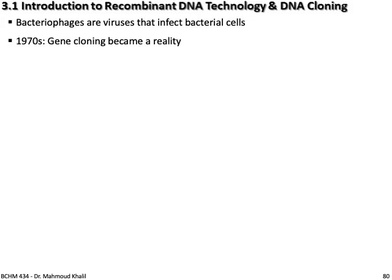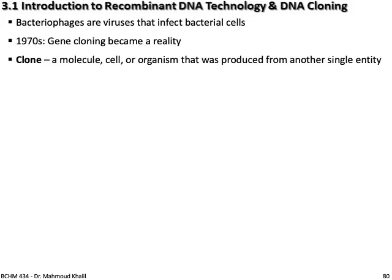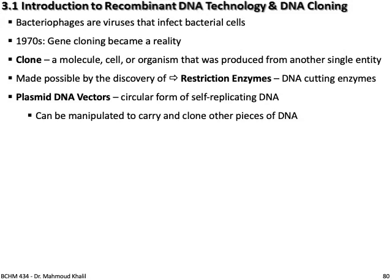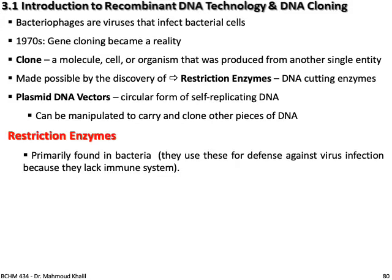Bacteriophage are viruses that infect bacterial cells. In 1970, gene cloning became a reality. What is a clone? A clone is a molecule, cell, or organism that was produced from another single entity. It's made possible by the discovery of restriction enzymes, which are DNA-cutting enzymes. The plasmid DNA vector is a self-replicating DNA generally present in bacteria. Restriction enzymes are commonly found in bacteria.